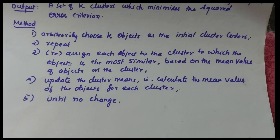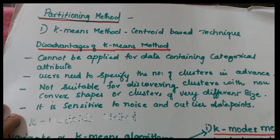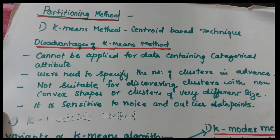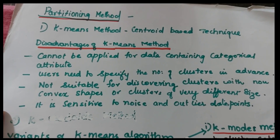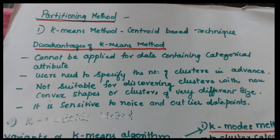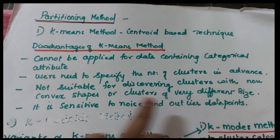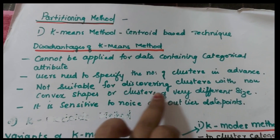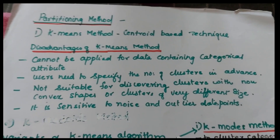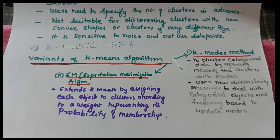The disadvantages of K-Means are: first, it cannot be applied to data containing categorical attributes; the user needs to specify the number of clusters in advance; it is not suitable for discovering clusters with non-convex shape or clusters of very different sizes; and it is sensitive to noise and outlier data points. To address these, we extend K-Means — one extension is the K-Mode method.